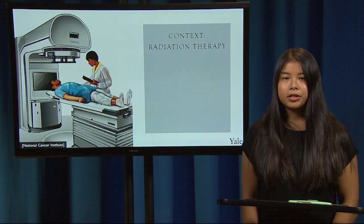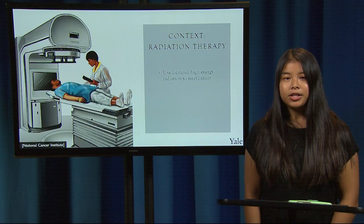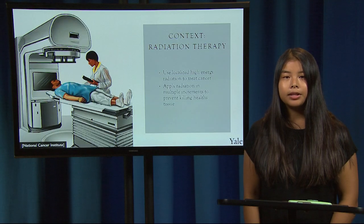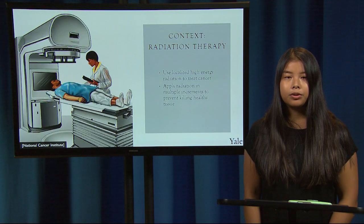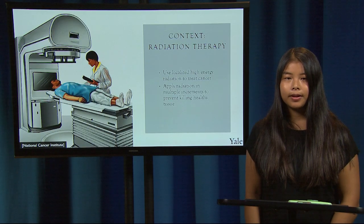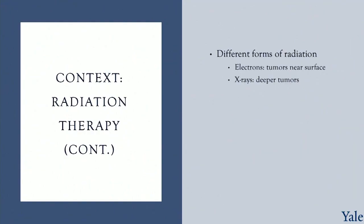As a reminder, Therac-25 was a machine used for radiation therapy. Radiation therapy uses localized high-energy radiation to treat cancer. The common practice is to apply doses of radiation in multiple increments in order to avoid killing healthy normal tissue, since normal cells can recover faster than cancer cells. There are different forms of radiation: electrons can be used to treat tumors near the skin surface, while x-rays, which have 100 times more energy, are used to treat tumors deeper into the body. Direct exposure to x-rays can cause serious harm to patients.